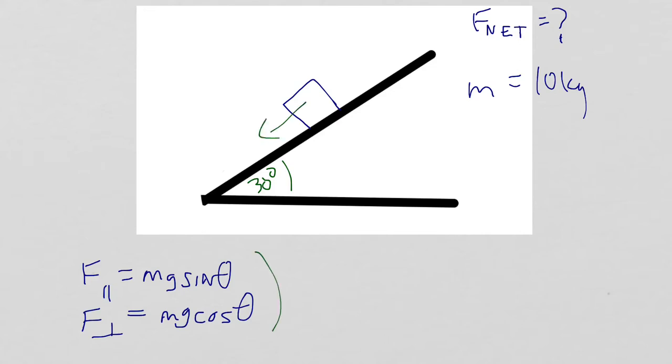Look at these two equations that we have here. We have F parallel and F perpendicular. Fg, or the weight of the object, is always going towards the center of the Earth or straight down. But we can go ahead and break this up into these components. That's F parallel and F perpendicular.